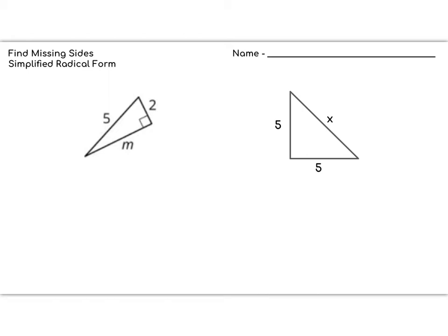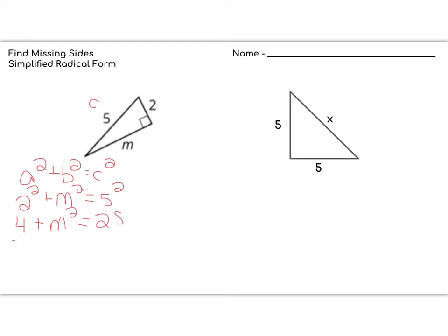So, what does that mean? Here I have a right triangle. Notice that it has legs of 2 and m, and the hypotenuse is 5. We know that a² + b² = c². I'm going to plug in — 5 is c because it's the hypotenuse — so 2² + m² = 5². That gives us 4 + m² = 25. Subtracting 4 from both sides, I get m² = 21.